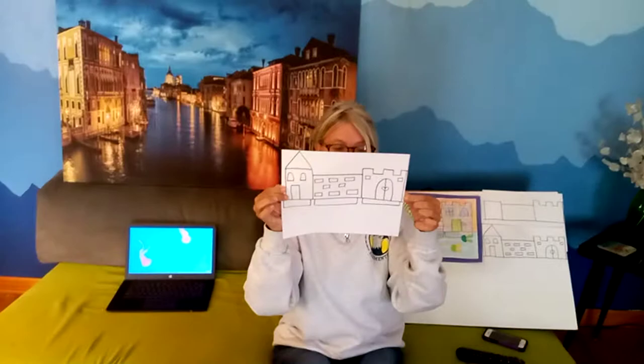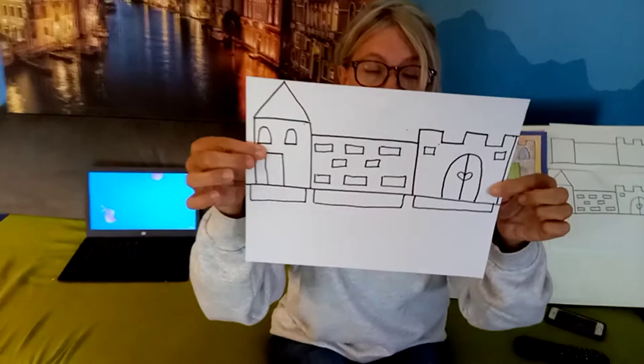And the last thing I did on my drawing is I added three rectangles underneath, and those are the reflections that we can see of the buildings, because this area is going to be our canal.